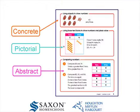What does concrete to pictorial to abstract mean? Concrete refers to the use of manipulatives or physical objects to illustrate math concepts. Objects are then represented pictorially within the text. Finally, math concepts are represented abstractly, with numerals and symbols. The concrete to pictorial to abstract progression is consistent throughout concept development and problem solving. Problems start simple and increase in complexity.